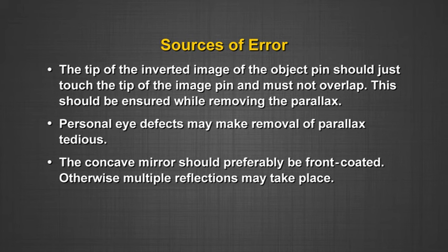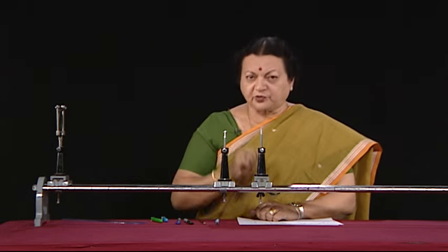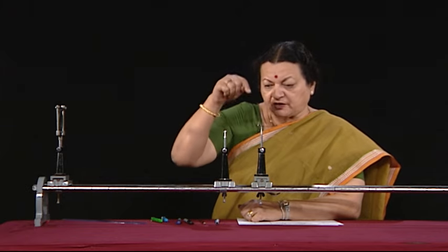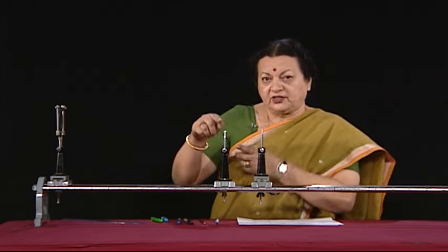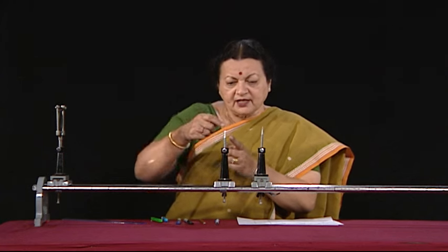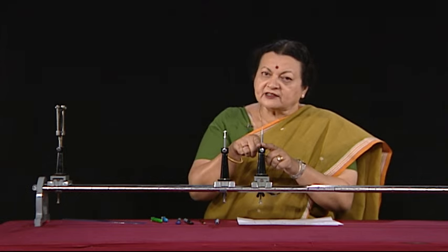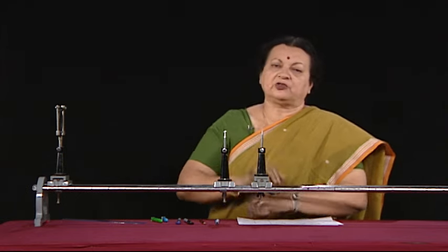One major source of error is incorrect parallax removal. Without the rider on the object pin, it is very difficult to identify which image you are looking at. You must use the identified image of the selected object pin. Place the rider on the object pin, look for the inverted image of that pin, and move the image locator pin until there is no parallax between the two. Both pins should be sharp for easy and accurate parallax correction.